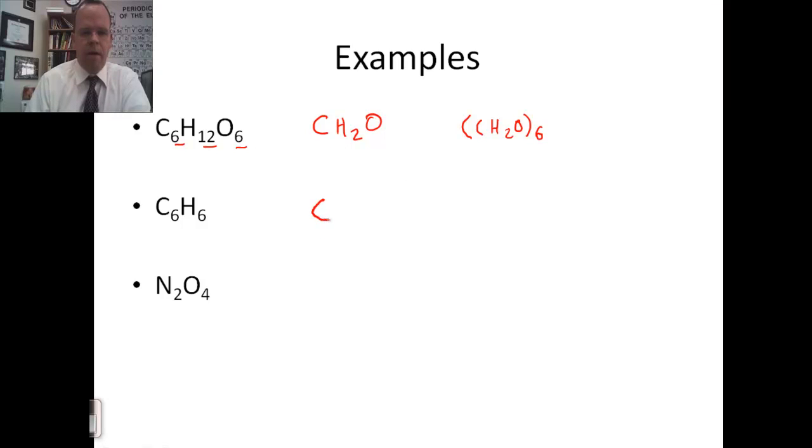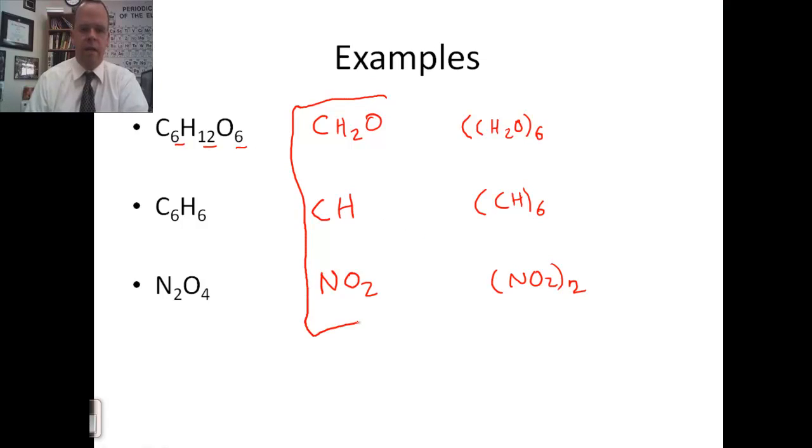In this case, the empirical formula would be CH. To get to the molecular formula that we started with, we'd be once again multiplying the whole formula by 6. In this case, the empirical formula would be NO2. To get to the molecular formula, we'd be multiplying by 2. So, our three empirical formulas here are the simplest ratios: CH2O, CH, and NO2.